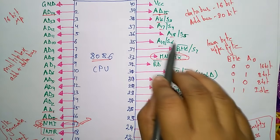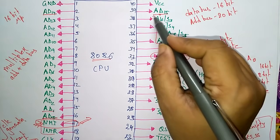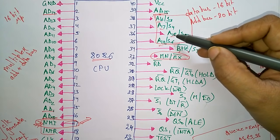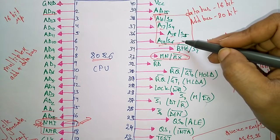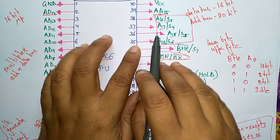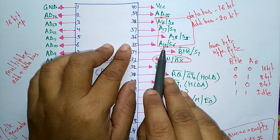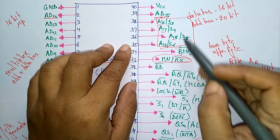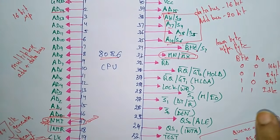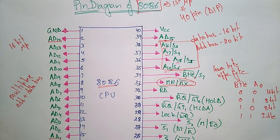The address and status bus lines A16–A19 also carry S3–S6 status signals. During the first clock cycle these lines carry the 4-bit address (A16–A19); in subsequent clock cycles they carry status signals. VCC is the power supply pin for the 8086 microprocessor. That concludes the pin configuration of the 8086 microprocessor.